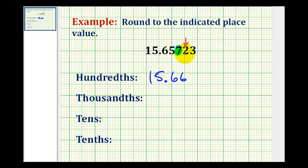And because it's a two, we're going to round down, which means we'll keep this as a seven and leave off the remaining digits. So we'll have fifteen point six five seven and leave off the remaining digits.